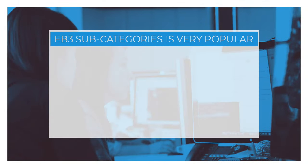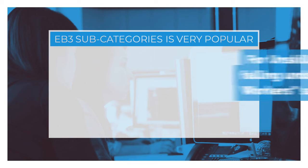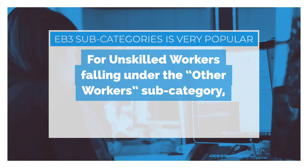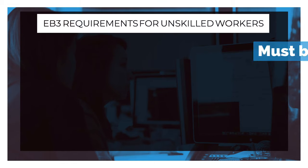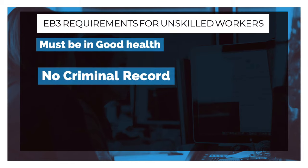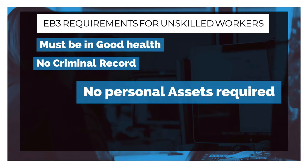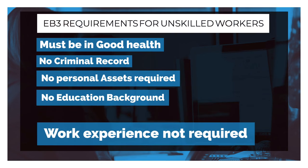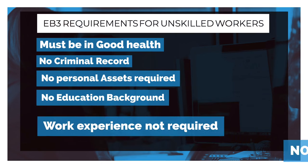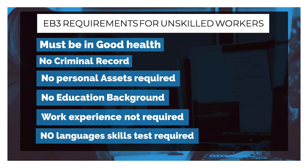The EB3 subcategories are very popular. For unskilled workers falling under the other worker subcategory, we have employers who are willing to provide you with a full-time job offer. EB3 requirements for unskilled workers: must be in good health, no criminal record, no personal assets required, no education background required, work experience not required, no language skills test required.